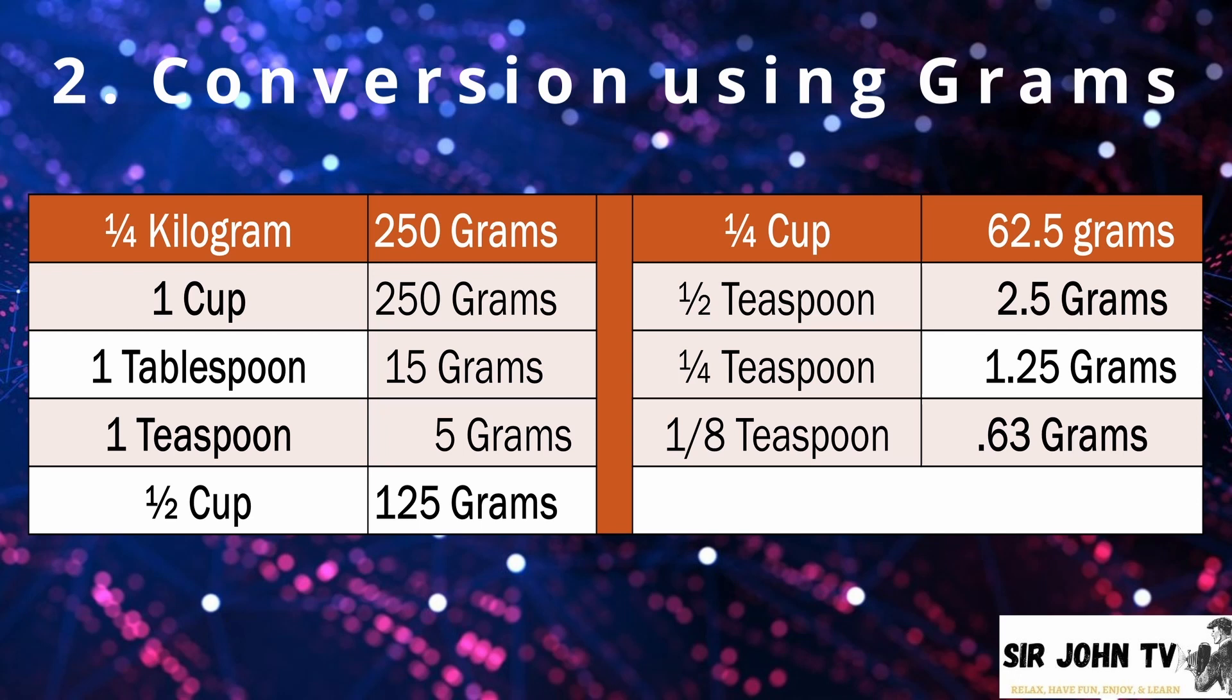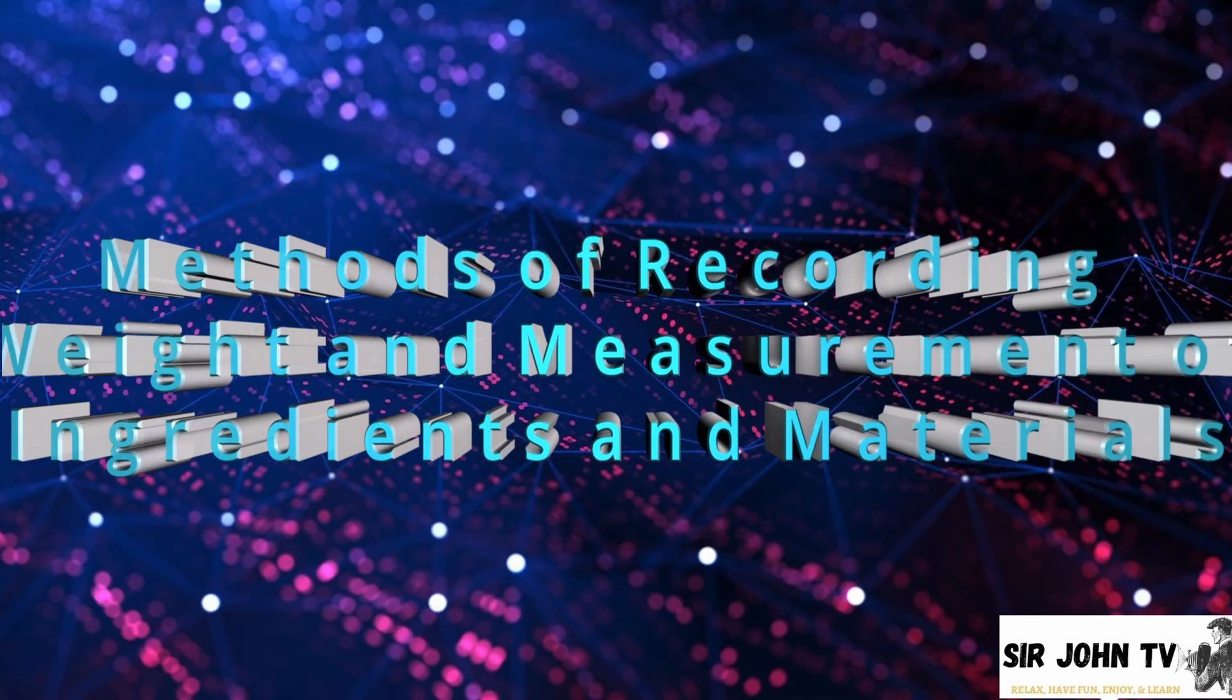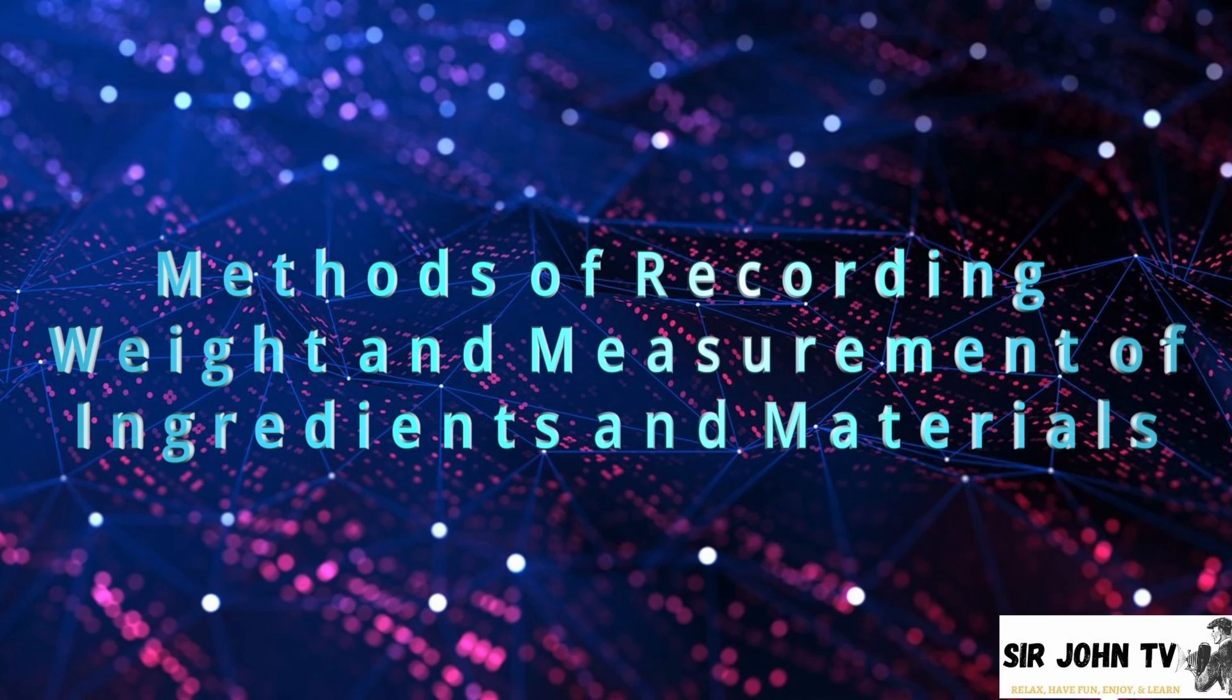We also have 1 fourth cup, which is equal to 62.5 grams, 1 half teaspoon, that is equal to 2.5 grams, 1 fourth teaspoon is equal to 1.25 grams, and 1 eighth teaspoon is equal to 0.63 grams.